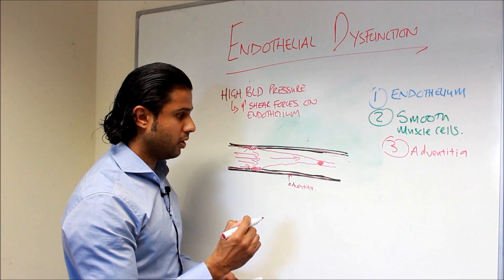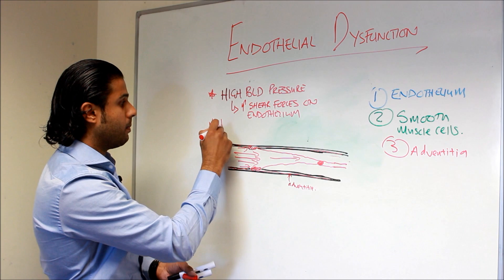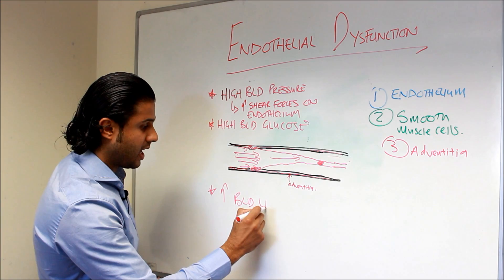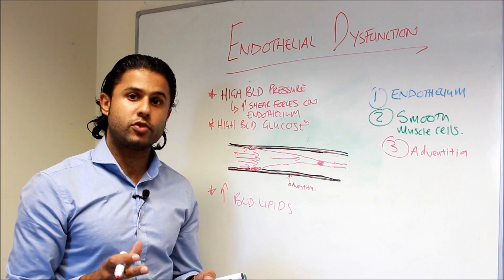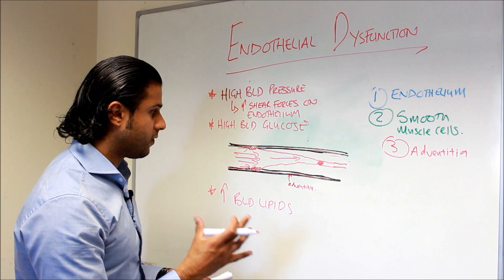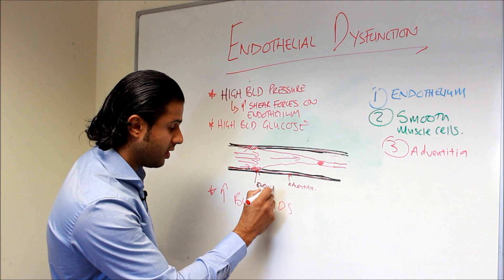This is what happens as you progress through life. You have a damaging risk factor — that could be high blood pressure, high blood glucose which also causes damage to the artery, or an increase in blood lipids such as harmful low-density lipoprotein cholesterol. There are plenty of other risk factors too: physical inactivity, being sedentary, being obese — all of these factors can cause direct damage to the endothelial lining. That first damage is what is called endothelial dysfunction — it's that initiating step.